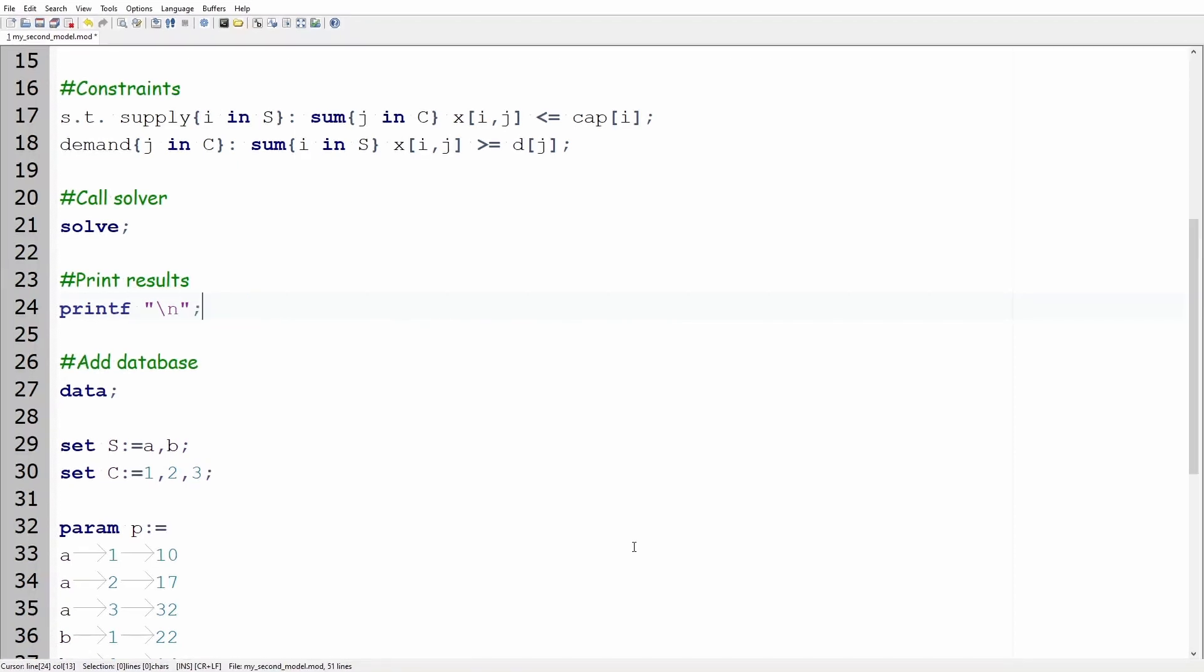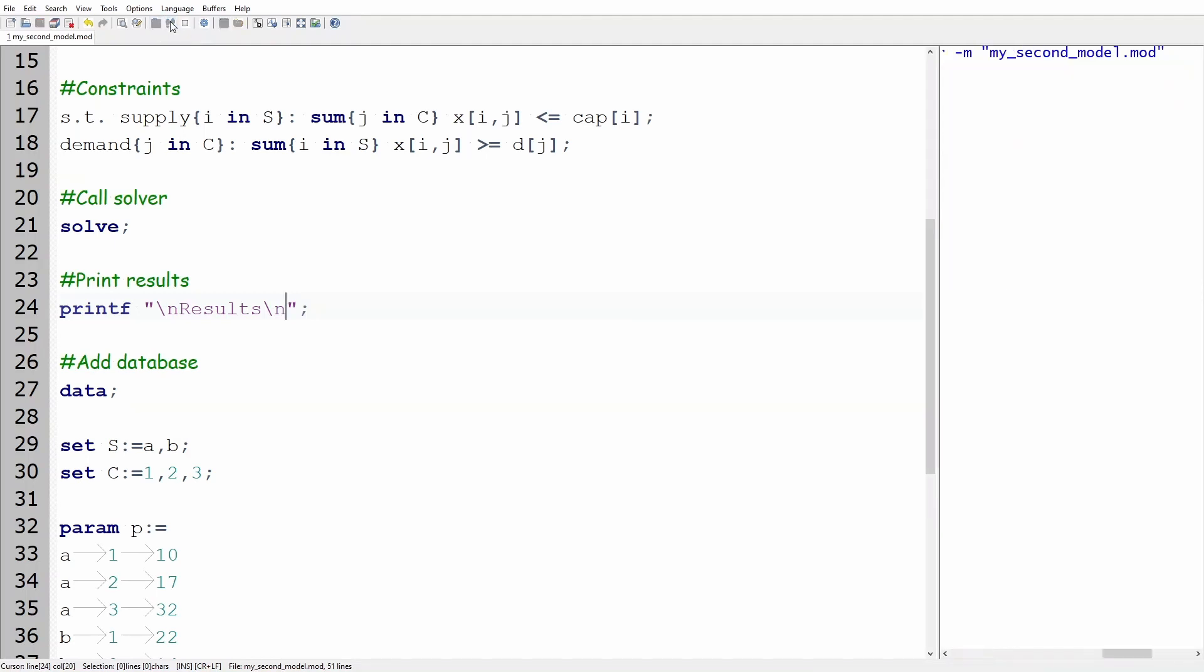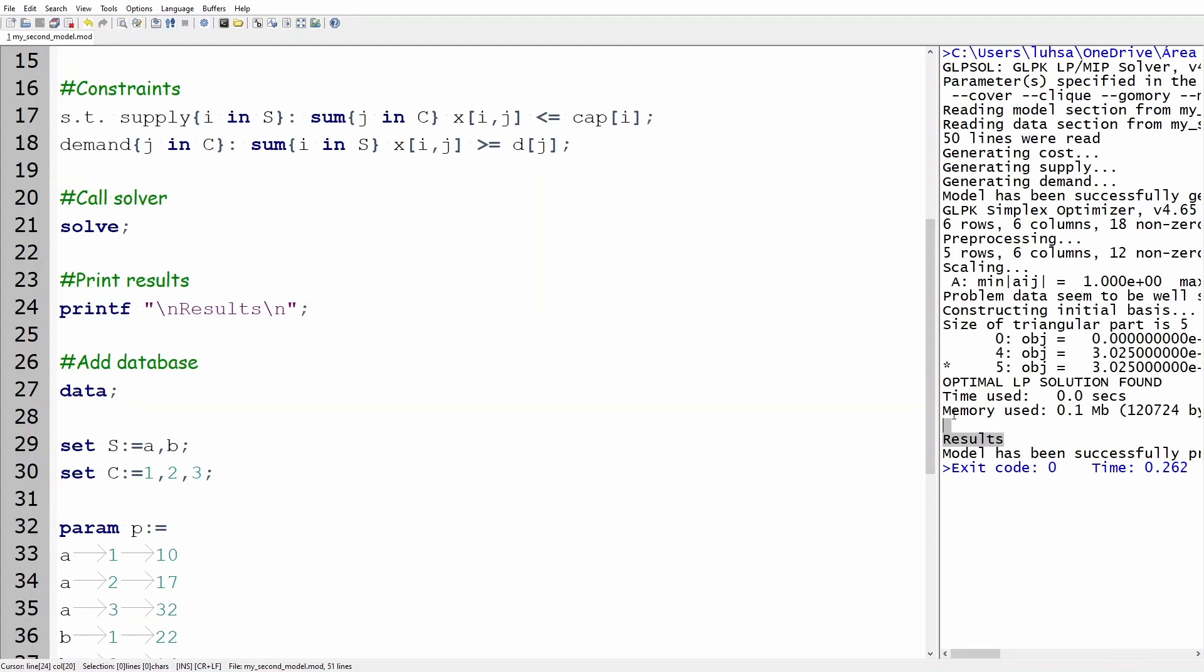Inside the quotation marks, type backslash n results backslash n. Compile and run the code. Do you see that the word result is now appearing at the terminal? That's what we want.